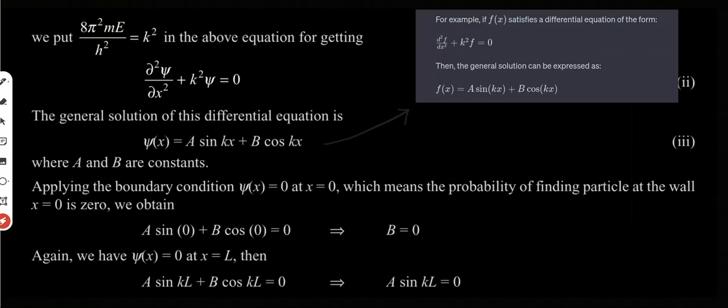At x equal to 0, the probability of finding the particle at the wall is 0, so psi(0) equals 0. Substituting: A sin(0) equals 0 — that term vanishes. And B cos(0) equals B times 1, which must equal 0, so B is equal to 0.